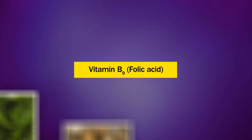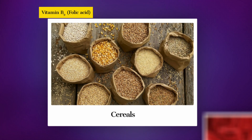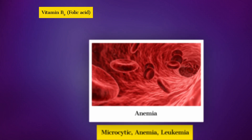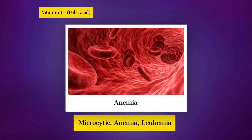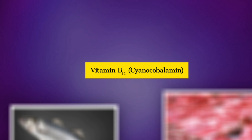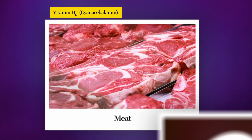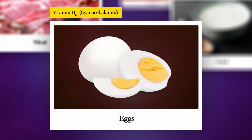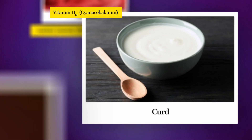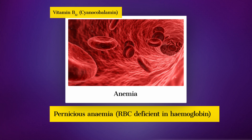Vitamin B9 (Folic acid): Sources — green leaves and cereals. Deficiency disease — microcytic anemia and leukemia. Vitamin B12 (Cyanocobalamin): Sources — fish, meat, egg, and curd. Deficiency disease — pernicious anemia with RBCs deficient in hemoglobin.